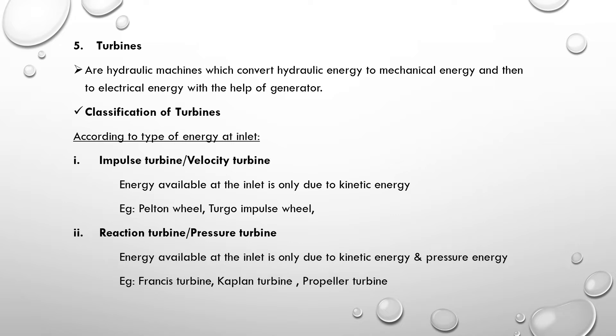Turbines are hydraulic machines which convert hydraulic energy to mechanical energy. The hydraulic machine converts mechanical energy, and then to electric energy with the help of a generator. The generator converts mechanical energy to electric energy.